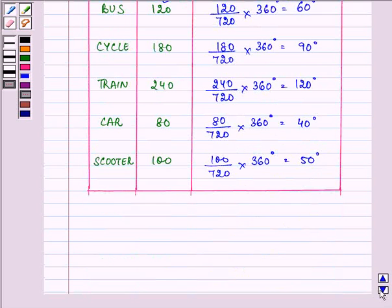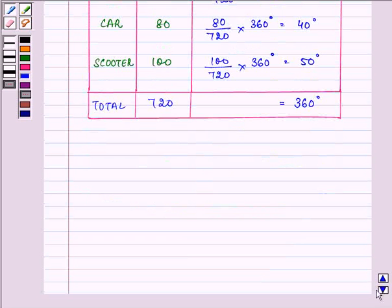These are the rest. The sum should be 360, and on calculating I found out that it was equal to 360 degrees. Now I need to represent this data on a pie chart. So let's have a circle.